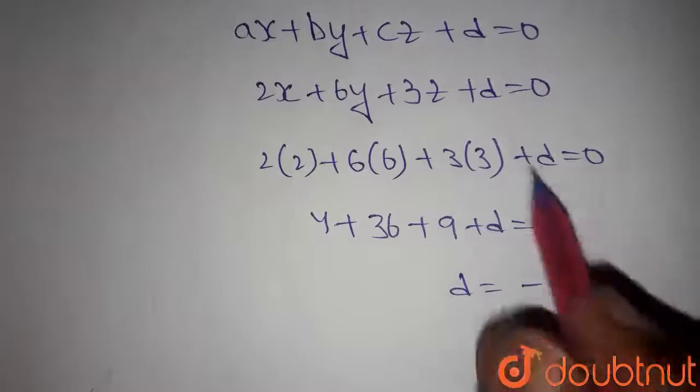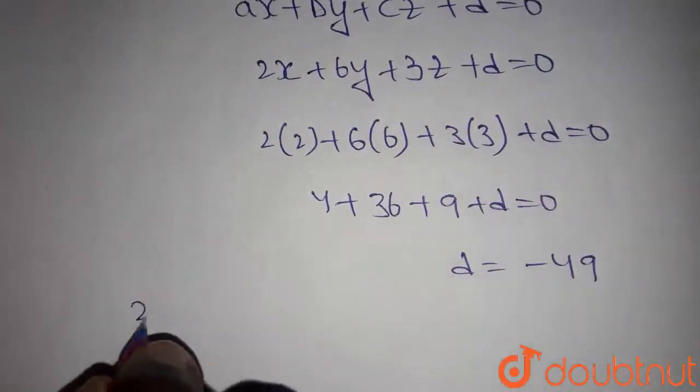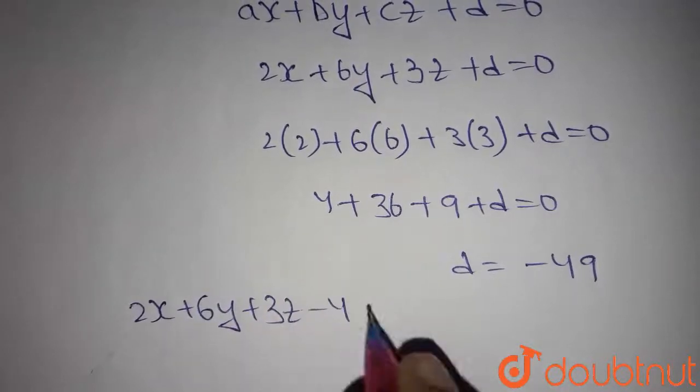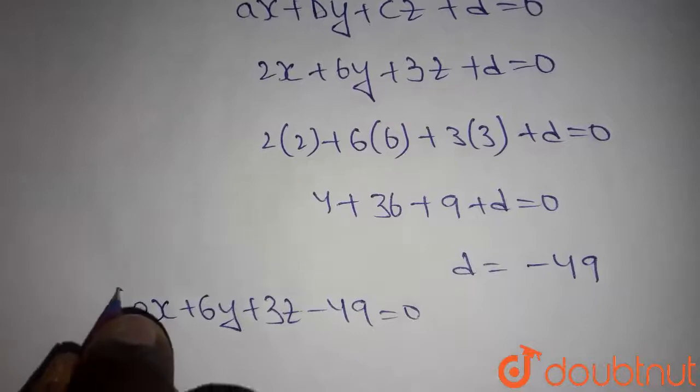Now substitute d equals minus 49 in the plane equation. Then we can get the plane equation as 2x plus 6y plus 3z minus 49 equals 0. This is the required answer.